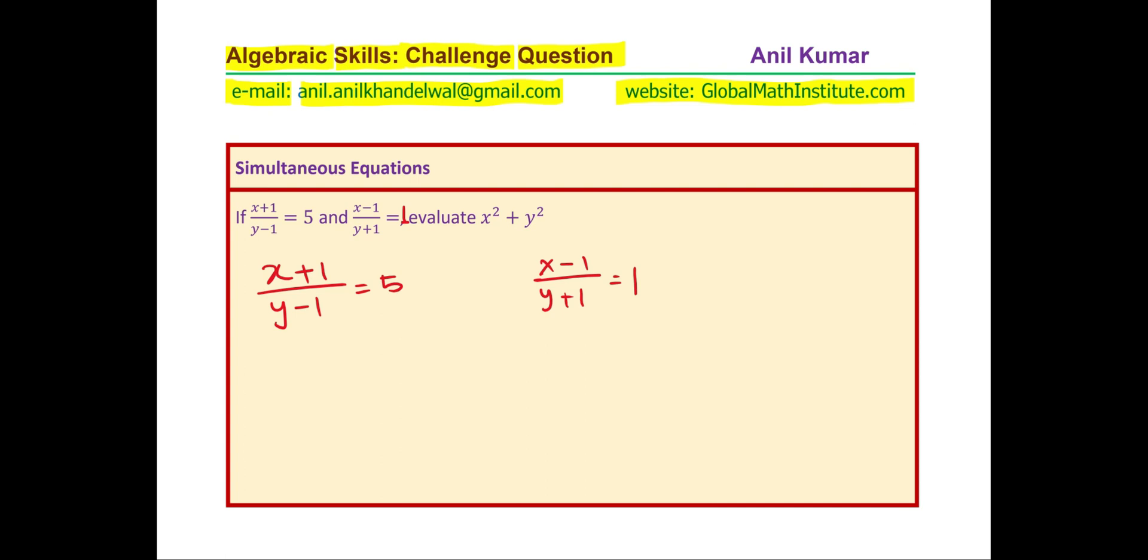One is trial and error, which is very effective at times if you really don't know the method. So, you can try some values. In that case, you might get a result very fast since all are integers.